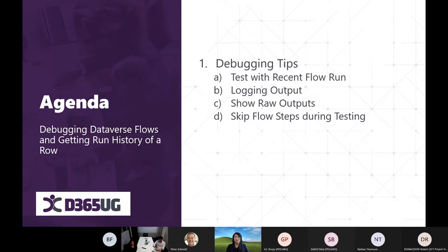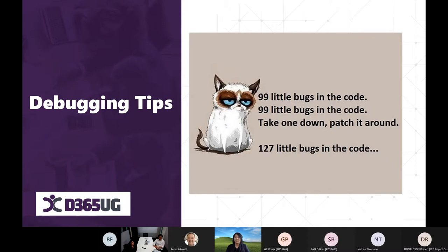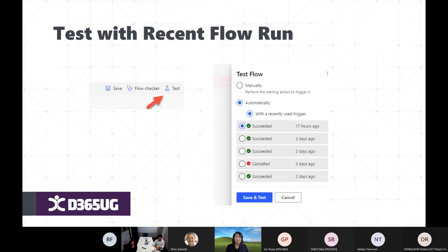There are two parts in today's agenda. The first part covers debugging tips — how to log outputs and tricks I use when debugging or testing flows. The second part is about getting the flow run for a particular record or row GUID. When I talk about debugging, it doesn't just mean clearing bugs — it also means test-running flows you've just created without impacting real data.